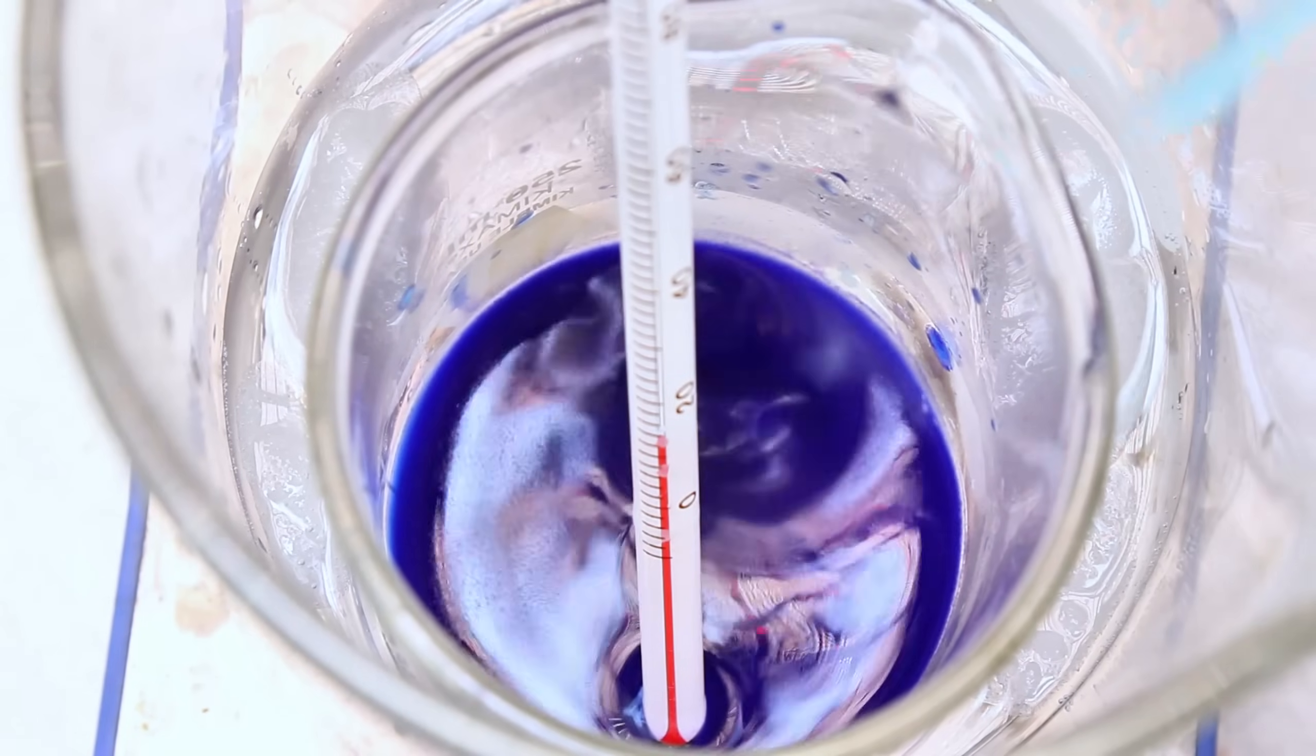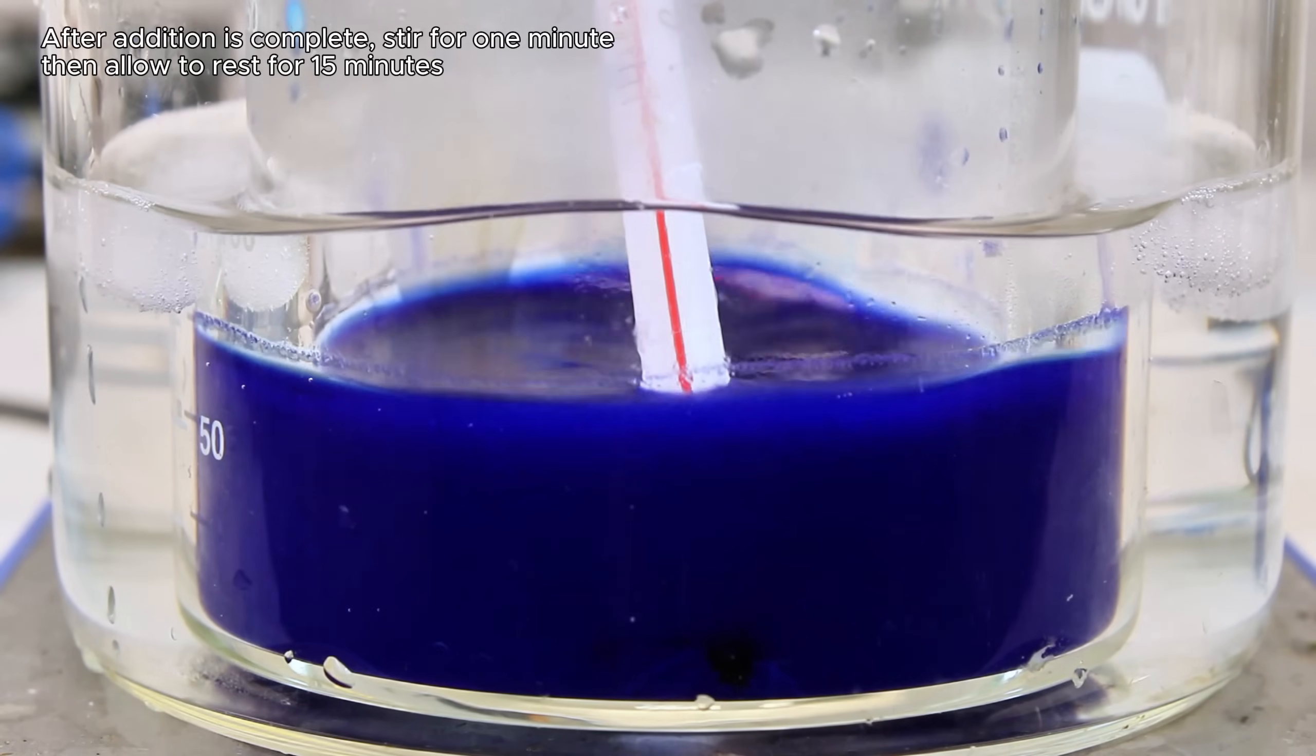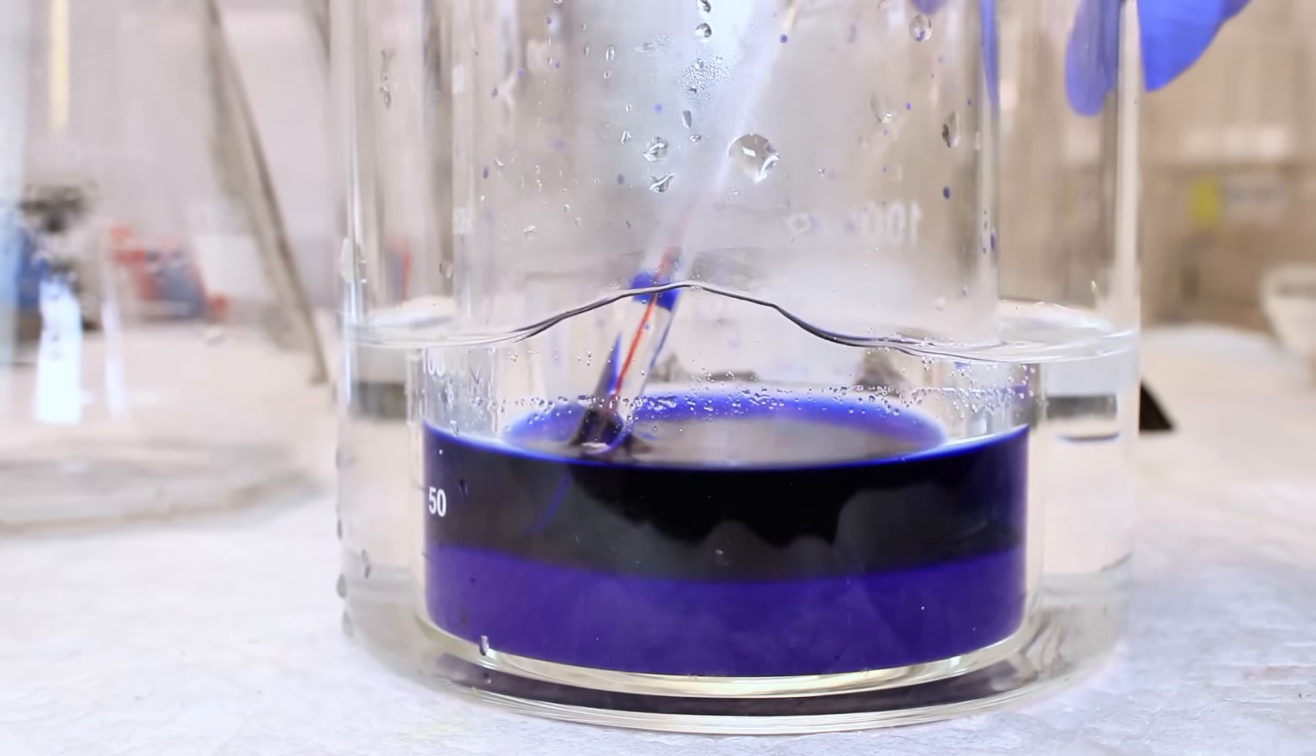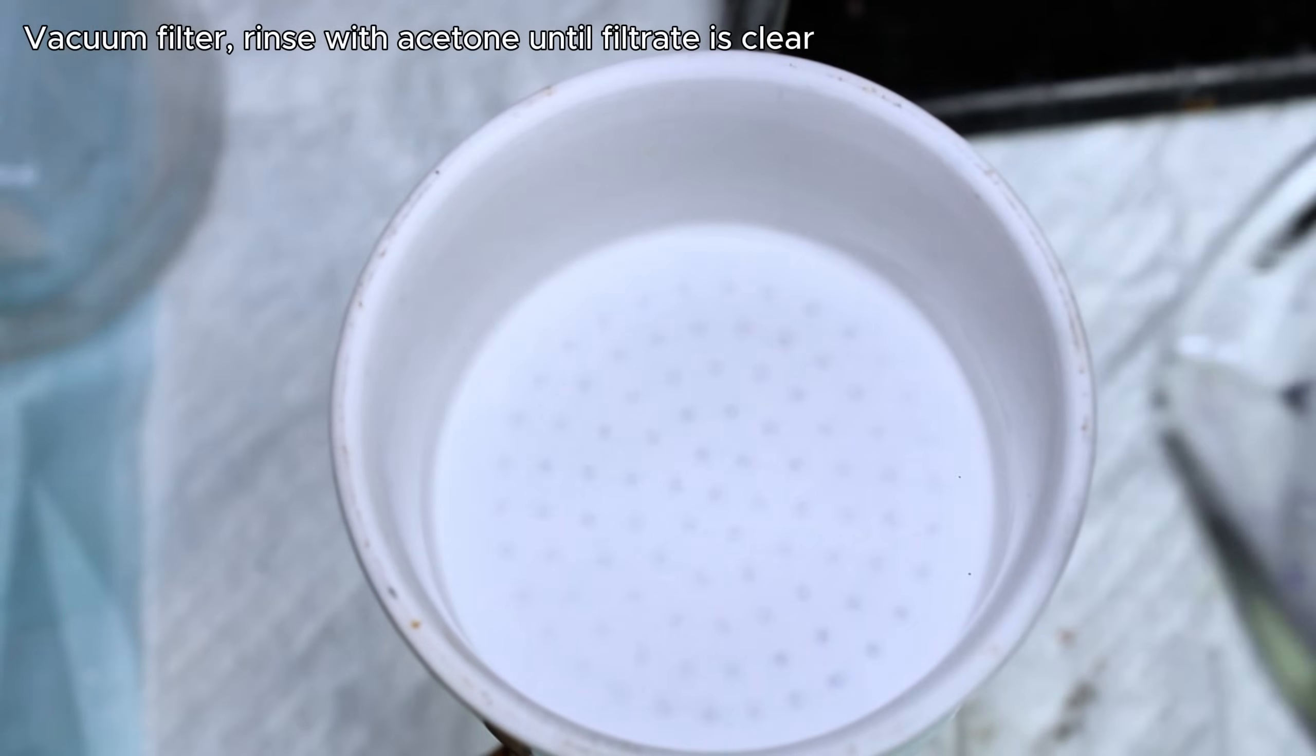Anyway, once all the copper sulfate had been added, I allowed the stirring to continue for about a minute, and then I allowed the beaker to sit on ice for about 15 minutes to allow the product to fully crystallize. Once it had, I dumped this all through vacuum filtration and rinsed it thoroughly with acetone until the filtrate ran clear.